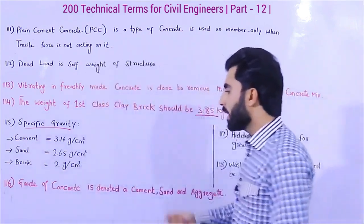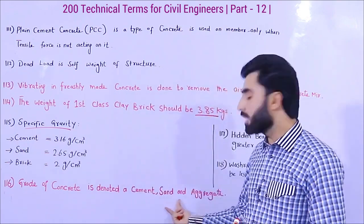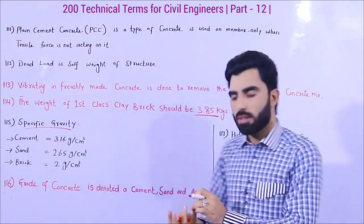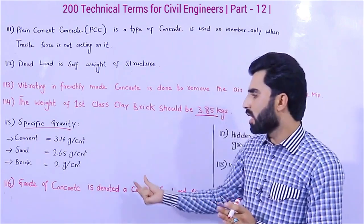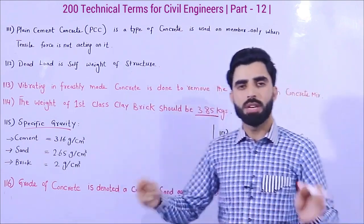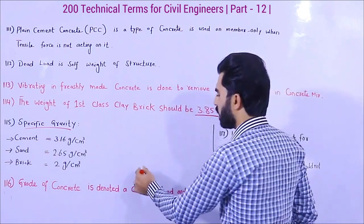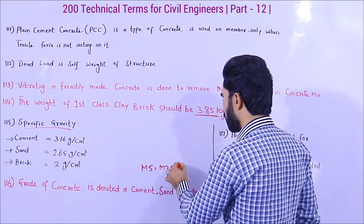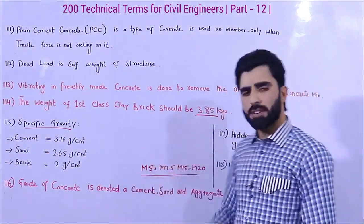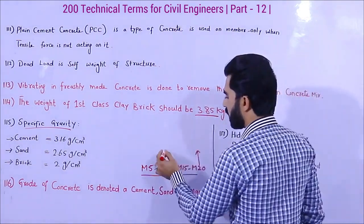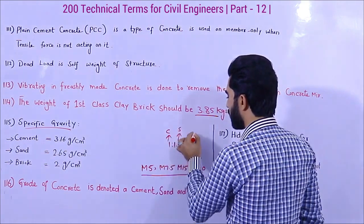Term number 116 is grade of concrete. If someone asks you what grade of concrete is — grade of concrete is denoted by the combination of cement, sand, and aggregate. We have different grades of concrete for different RCC structures and members, for example M5, M7.5, M10, M15, M20. For M15, the ratio is 1:1.5:3, where 1 is cement, 1.5 is sand, and 3 is aggregate.